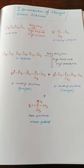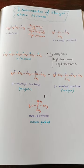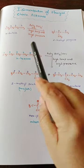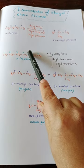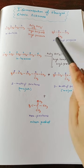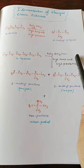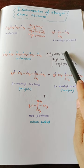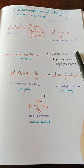Isomerization of straight chain alkane. When we treat N-butane with anhydrous aluminum chloride and HCl at high temperature and pressure, we get a chain isomer — we get 2-methylpropane.